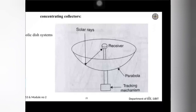The parabolic dish system is one more type of collector. It appears similar to a satellite dish. In this type of collector, mirror-like reflectors are used within the dish and an absorber is placed at a focal point. Unlike the linear focus used in previous cases, here we concentrate all the solar rays at one focal point where the receiver is located. This system uses a two-axis tracking system with a tracking mechanism below the dish.